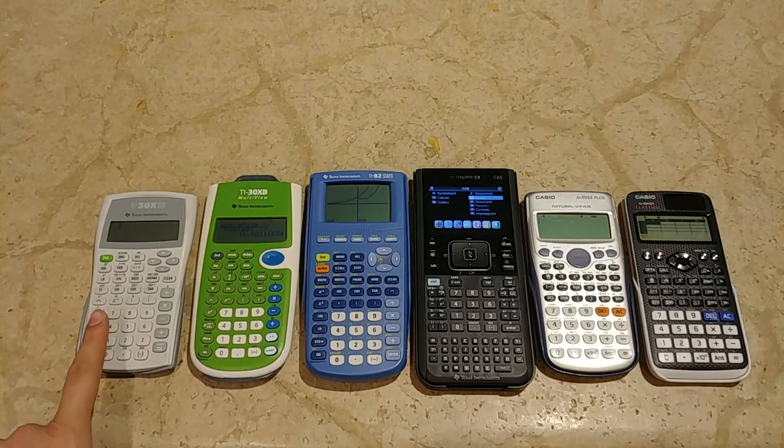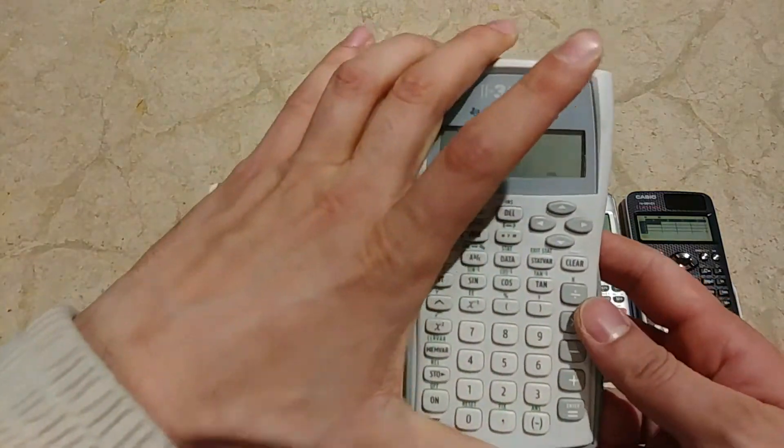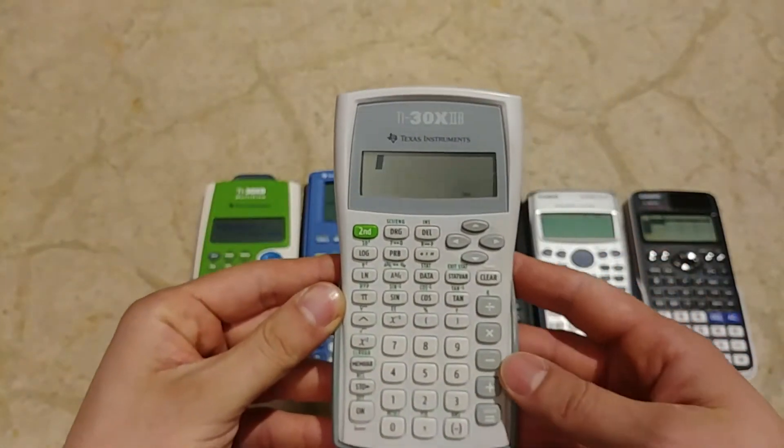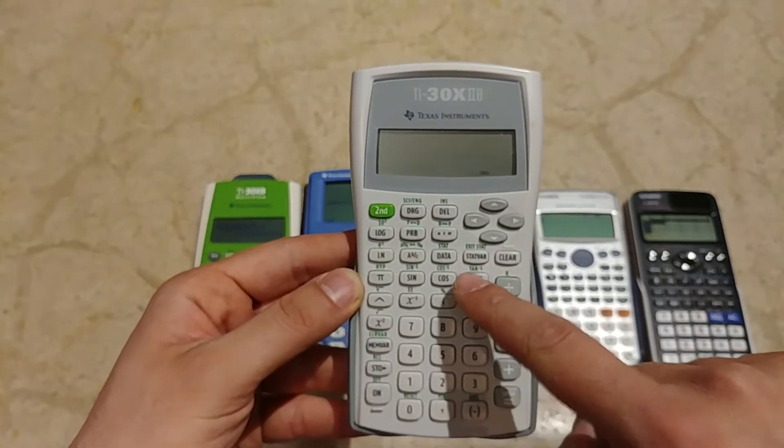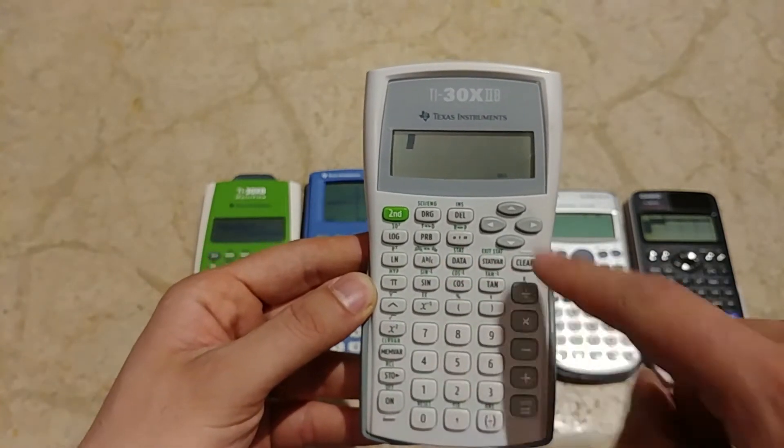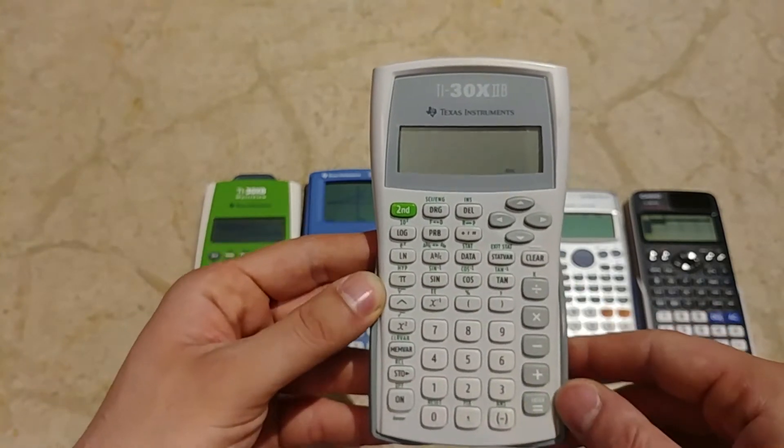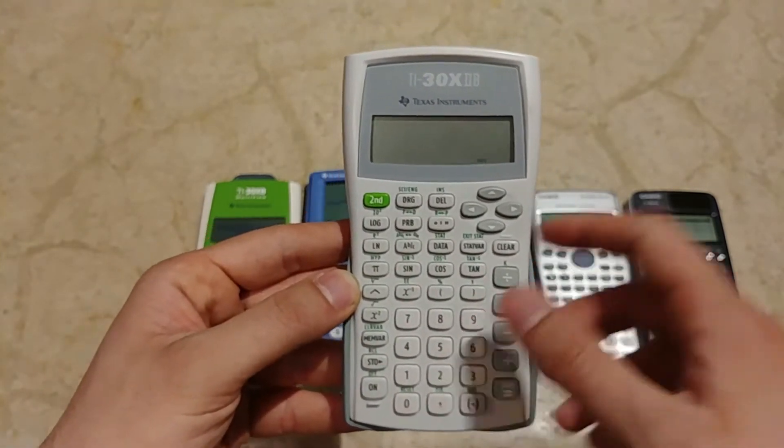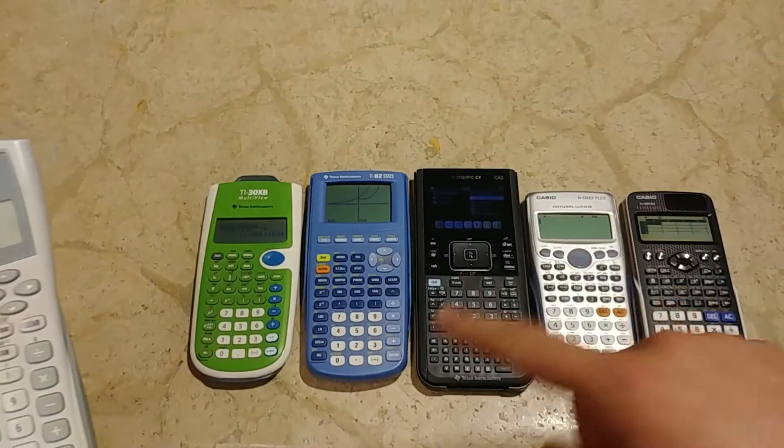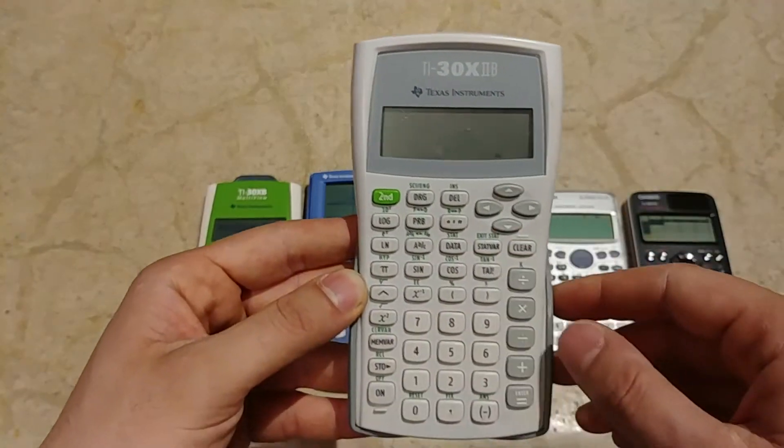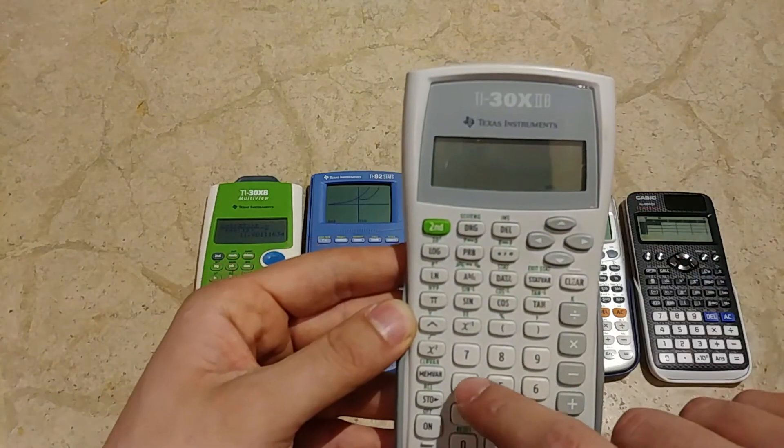We start from this one that is my first scientific calculator, the TI-30X2B. As you can see, it's a normal scientific calculator with sine, cosine, tangent and all the other mathematical functions. This is going to be a little review of all these models and types of calculators, Texas Instruments and Casio.